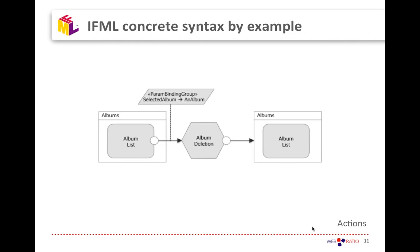This simple example shows two containers: an Albums container where you click on an album in a list and invoke an action called album deletion. This action has a reference to external business logic that performs the actual deletion. Once the action finishes it produces an event — such as success or failure — and based on that event you follow a flow to a target page or window.